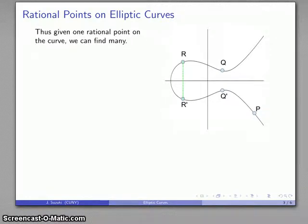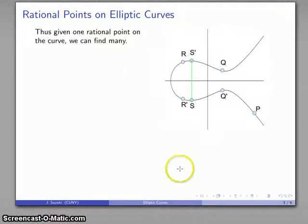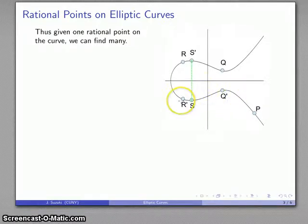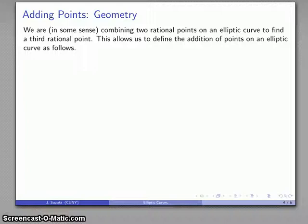Given one rational point on the elliptic curve, I can find many. I have point p, I have point r', and the line between these two will intersect at another point, whose reflection is also rational. What we're doing is taking two points p and q' and adding them — for want of a better term — to construct a third point r'. So we have the beginnings of an arithmetic of rational points on an elliptic curve.